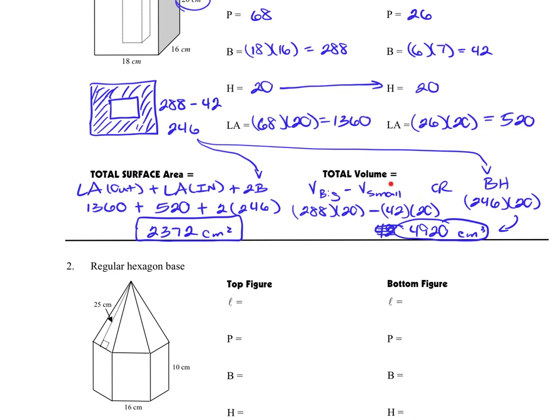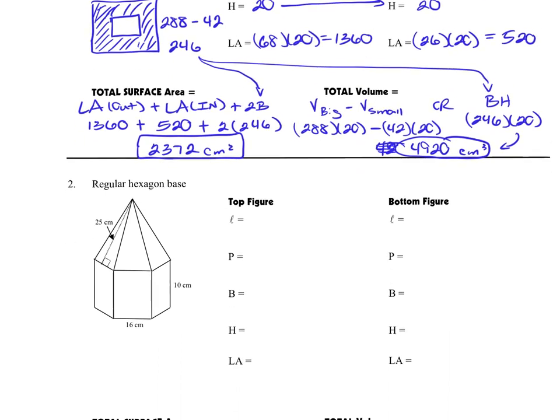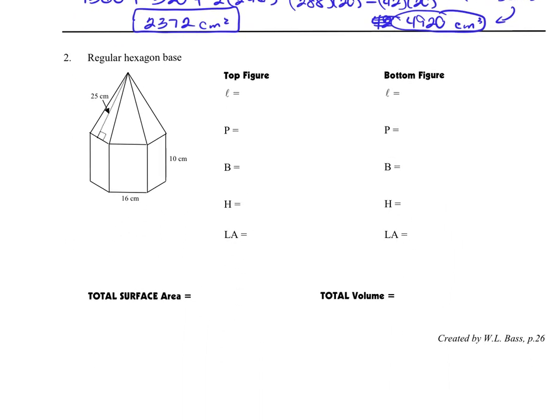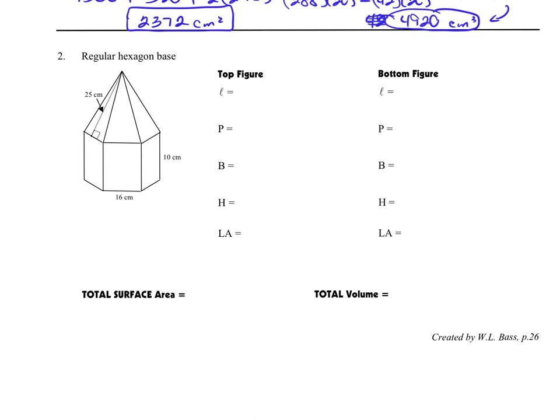Some of you are going to prefer this subtraction, and some of you are going to prefer to visualize this rectangular annulus times its height. Now, the next one that we're going to look at is going to be two figures added together. So instead of one taken away, we're going to look at two added together.